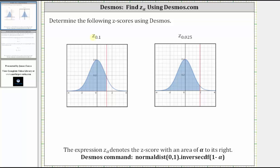For example, Z sub 0.1 is a Z-score where the area to the right is 0.1, which means the area to the left is 0.9. We need the area to the left to use Desmos to find the Z-score.